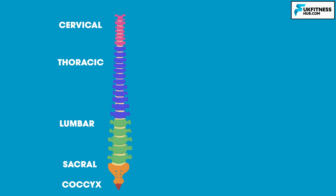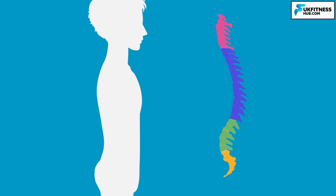If you look at the spine from the back, it will seem straight. However, if you look at the spine side on, you'll notice that it has four slight curves, similar to an elongated S shape. The curves are crucial for maintaining spinal health throughout your life. Your spine is a shock absorber — think of it like a spring. When you walk, run and jump, you're applying force onto your body and your spine helps to disperse that force.